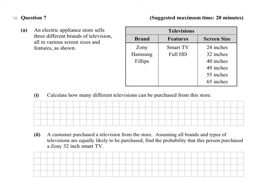We're continuing our corrections and starting today with question 7. An electric appliance store sells three different brands of televisions, all in various screen sizes and features. Calculate how many different televisions can be purchased from this store — basically, how many different TVs could you potentially order.